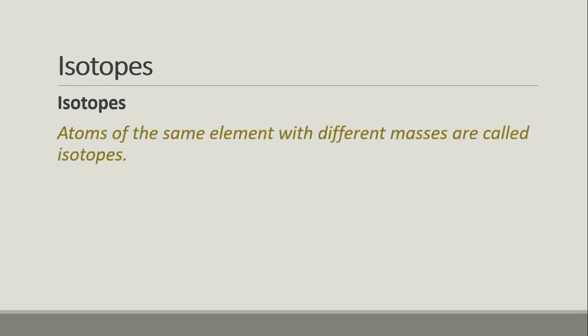Isotopes are atoms of the same element with different masses. Elements that have atoms with different masses are called isotopes. Isotopes are the same element with different masses — for example, the isotopes of chlorine: Cl and Cl.